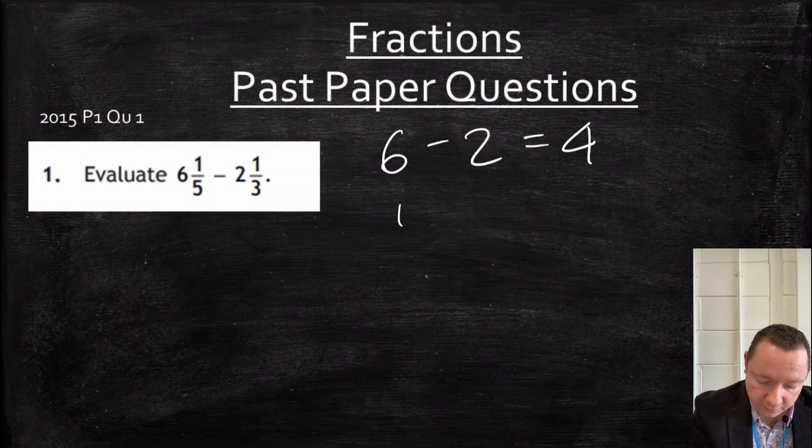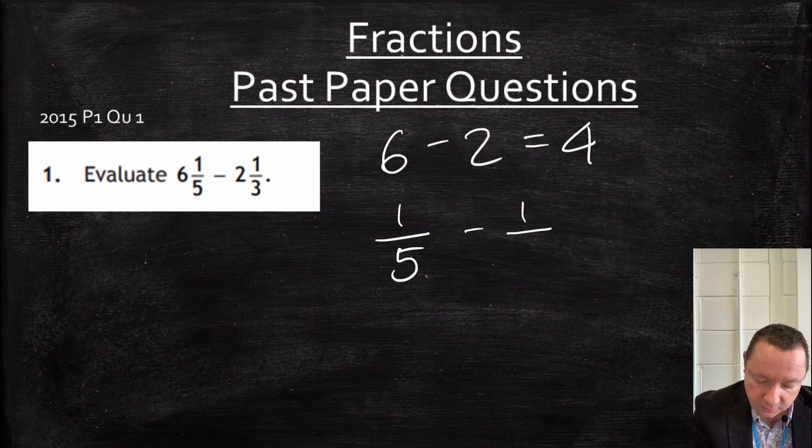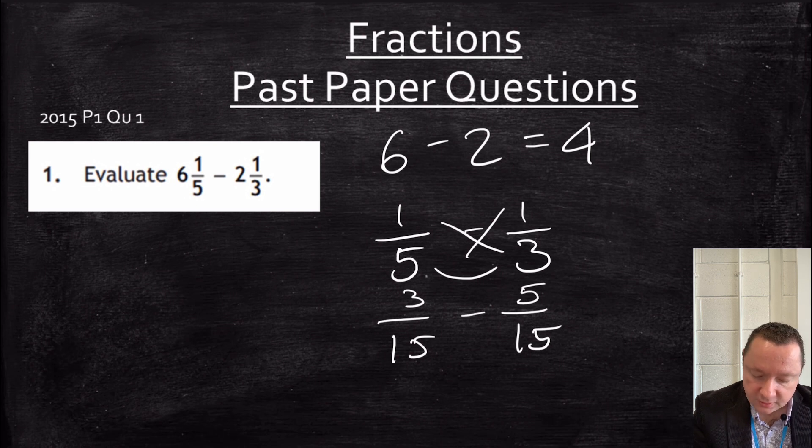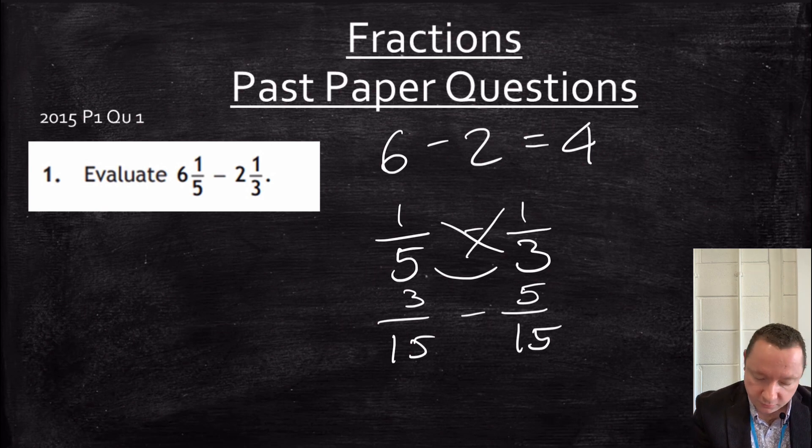Now I can do a fifth minus a third. Common denominator is 15. 1 times 3 is 3. 1 times 5 is 5. 3 fifths minus 5 fifteenths. Don't make a mistake, it's not 2. It's minus 2 fifteenths.